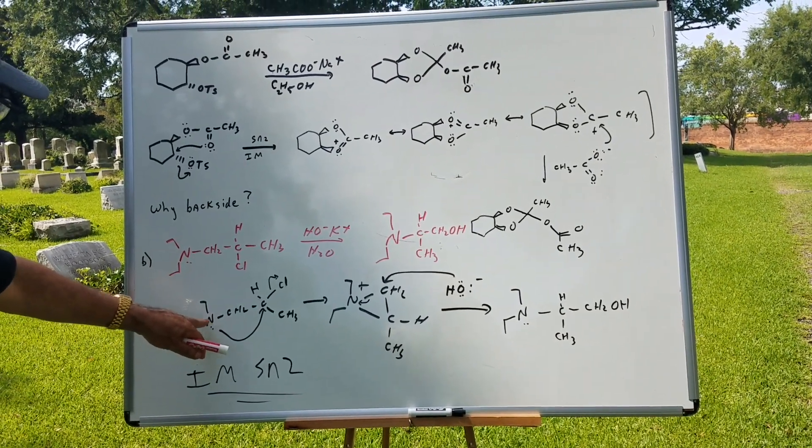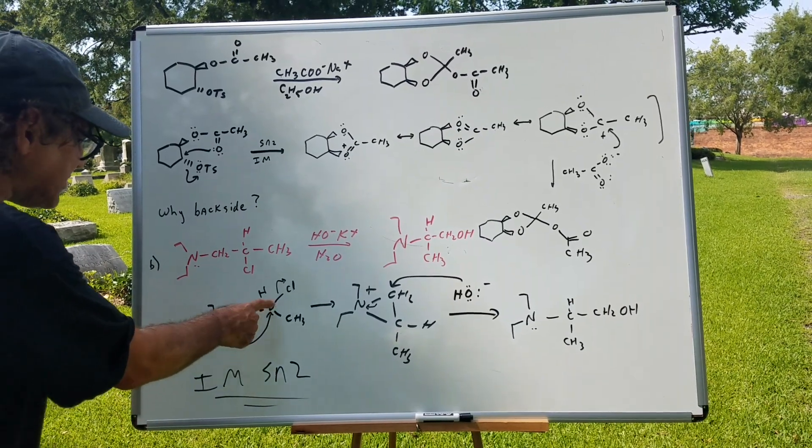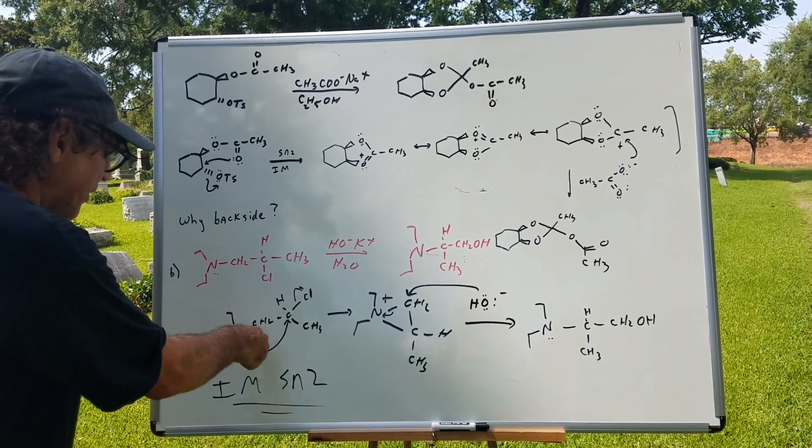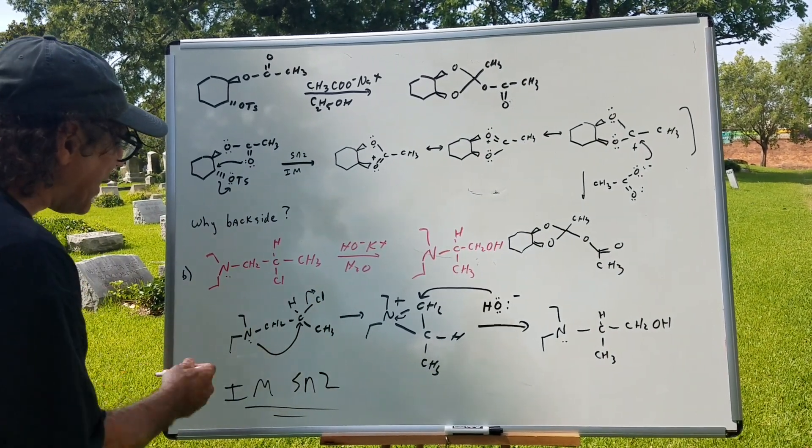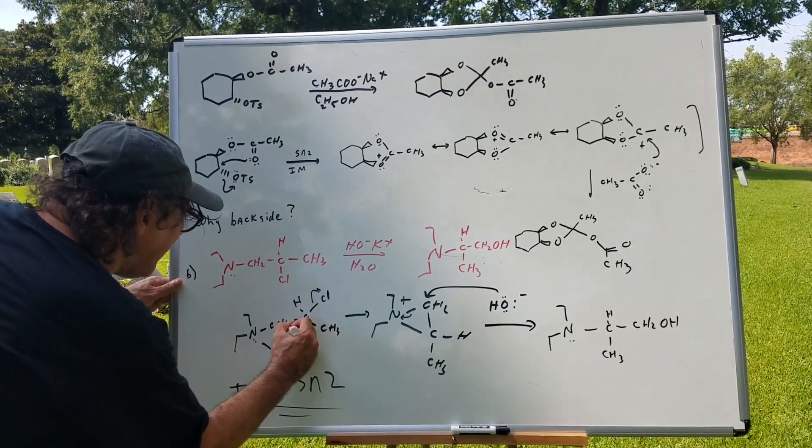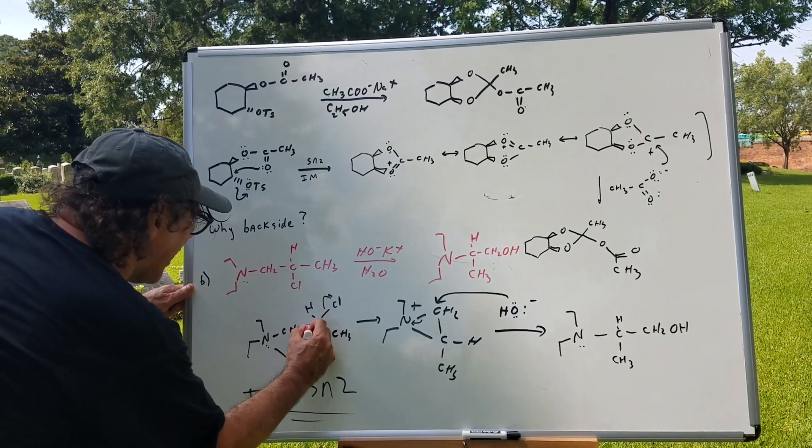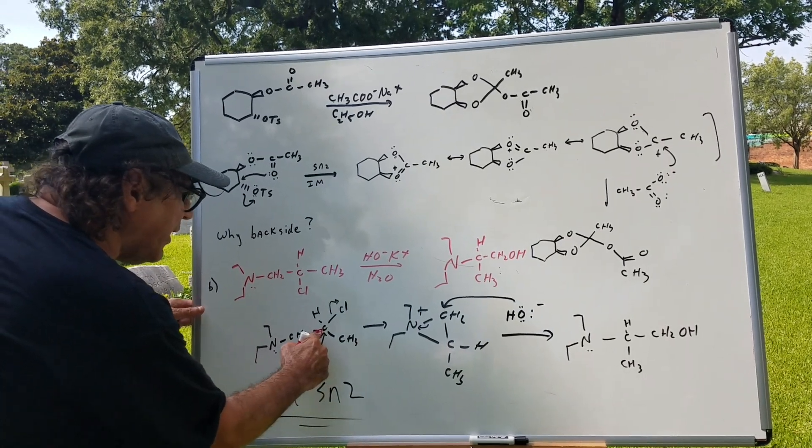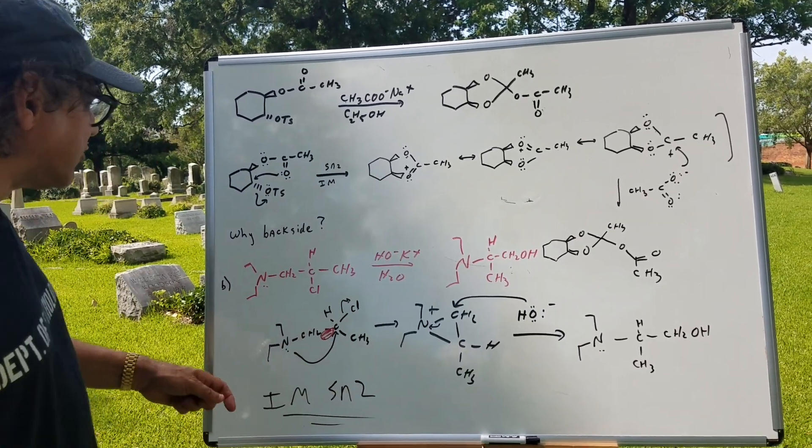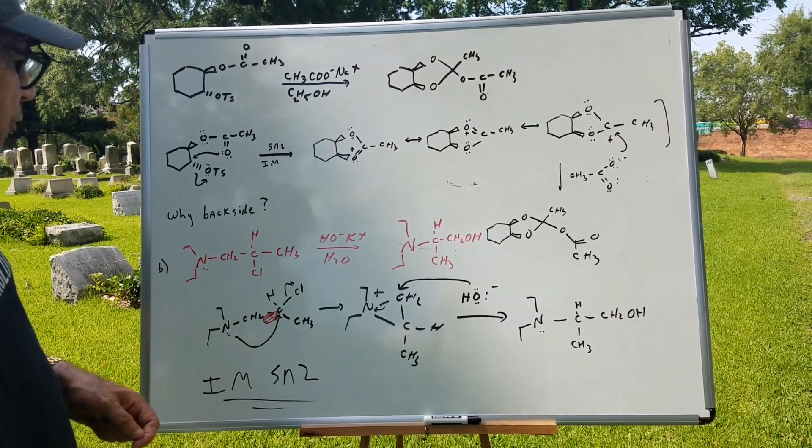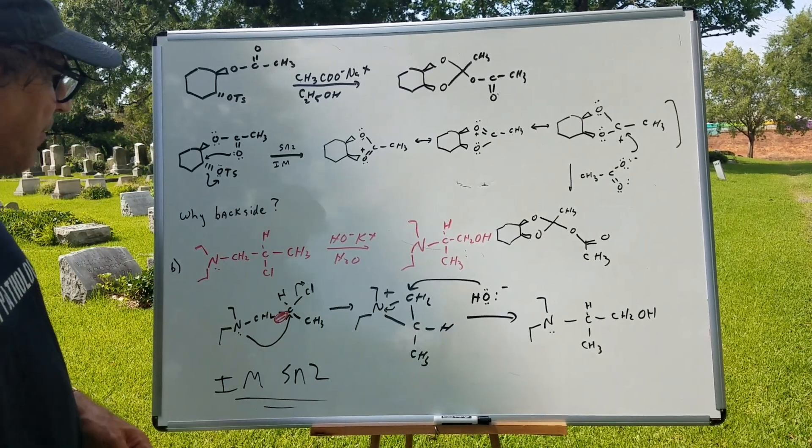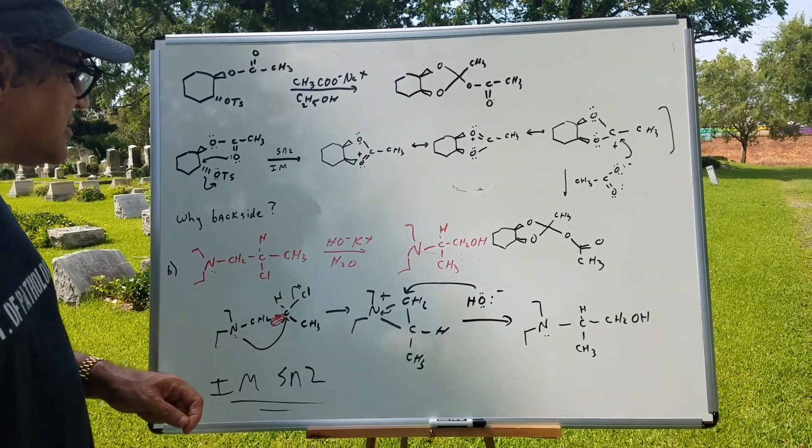So, lo and behold, look at what I did. I rewrote it. Notice I'm putting the chlorine to the opposite side so I can do a backside attack. By the way, right here would be the antibonding orbital that I would be hitting. Notice when I hit the antibonding orbital, we kick out the chlorine. And I form this kind of ring system.